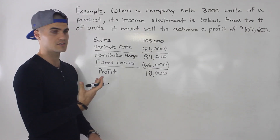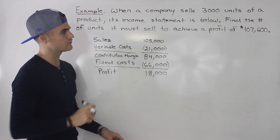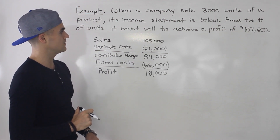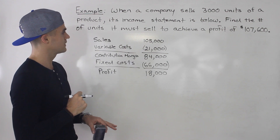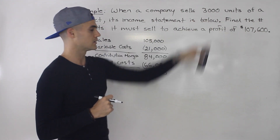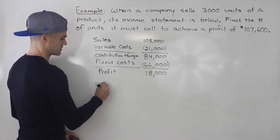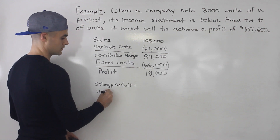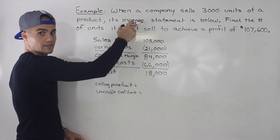Let's say when a company sells 3,000 units of a product, its income statement is shown below. We have to find the number of units it must sell to achieve a profit of $107,600. This question is a little unique because we're given total amounts for a certain production level, rather than per-unit figures. So what we can do is find the selling price per unit and the variable cost per unit by dividing those figures by the production level.